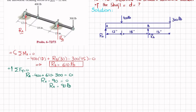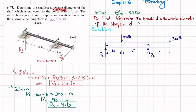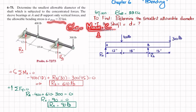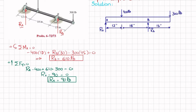With Ra and Rb known, we draw the shear force and bending moment diagrams. We need them because the allowable bending stress formula is sigma equals M·c divided by I, and we need the maximum bending moment from the diagram.